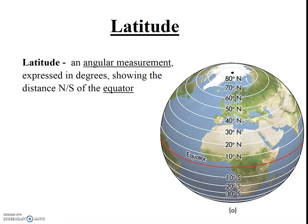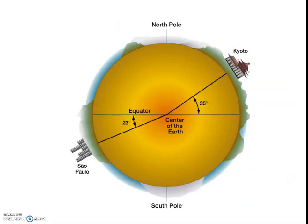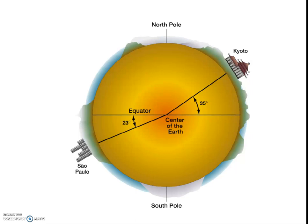The equator is the imaginary line around the Earth halfway between the north pole and the south pole, and the two poles lie on the Earth's axis of rotation. To understand angular measurement, put yourself at the center of the Earth and measure 35 degrees north of the equator. On the diagram, you can see that Kyoto, Japan is a city that happens to be 35 degrees north of the equator. If all the possible points of 35 degrees north latitude were connected together, it would mark a line of latitude around the globe at 35 degrees.